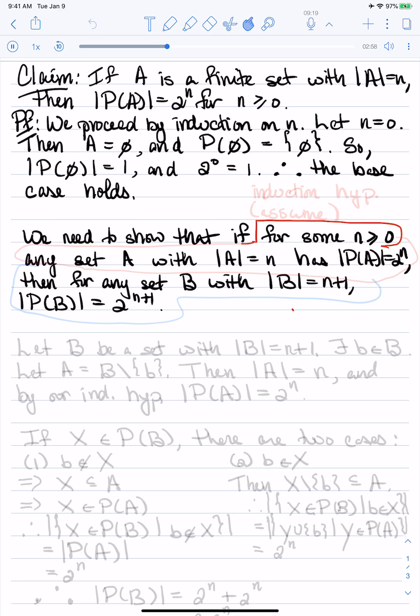Note that here, the part of this statement that comes after the if and before the comma is our induction hypothesis. It's what we get to assume in our proof. The part that comes after the comma is our conclusion, and this is what we're trying to prove.